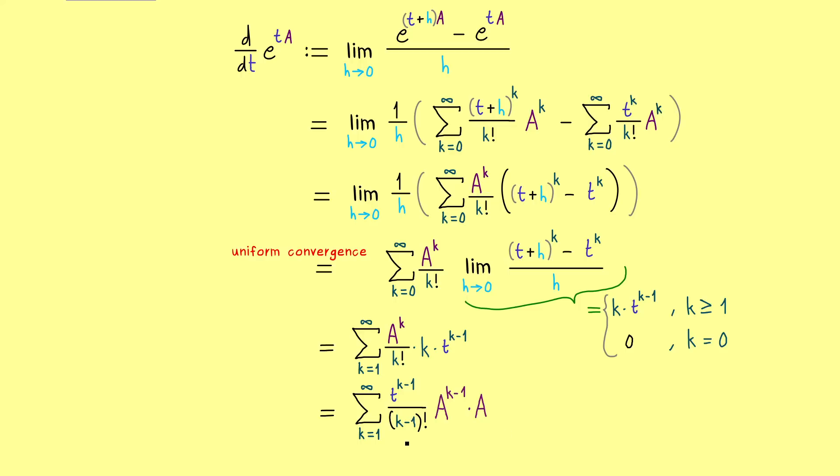And then what you should see is what we have in the front here is actually again our matrix exponential just with a shifted index. But obviously the index shift does not change anything, so we can write again e to the power tA. But most importantly here we should not forget that we have an additional matrix A we have to multiply from the right hand side.